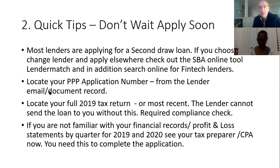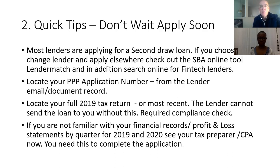Most lenders will be handling second draw loans. If you want to change your lender, look online — there's an SBA online search tool called Lender Match. If you need a quick solution, often it's a fintech lender, and there are several available to businesses in San Jose. For a second draw application, you must find your original first draw PPP application number — it's a required piece of information, found on an email or document from when you received your first loan.